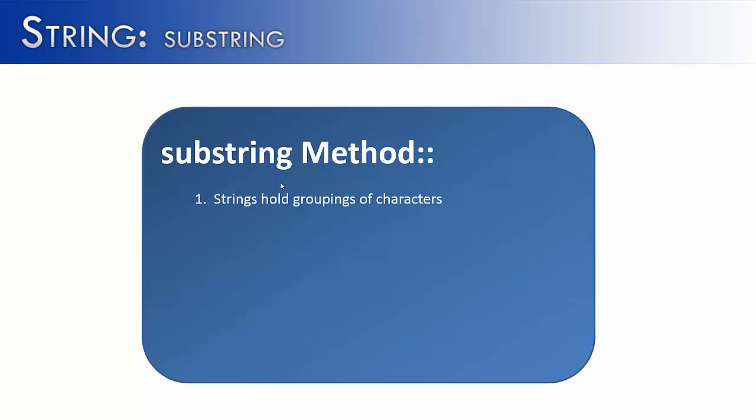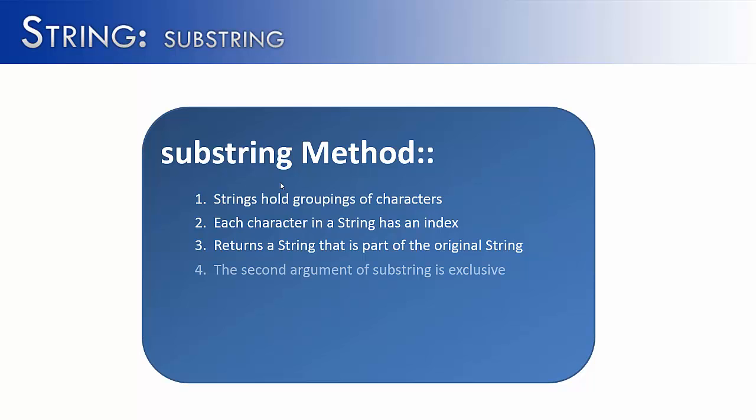Summing it up, strings hold groupings of characters, and they're divided into something called indexes. Substring returns a string that is part of the original string. The second argument of substring is exclusive, so meaning it's not going to be included. So if I want the letters 0 through 4, I would have to put 0 comma 5 in order to get that substring.